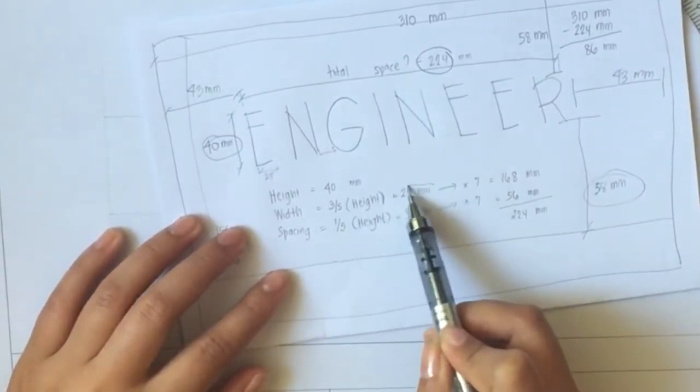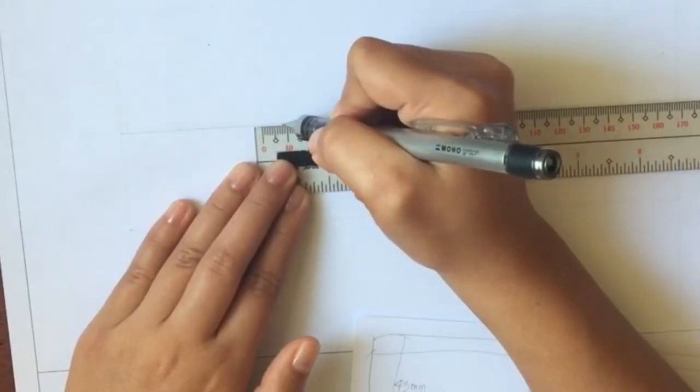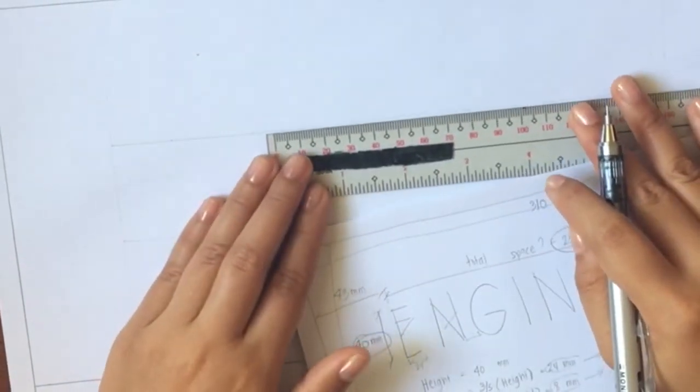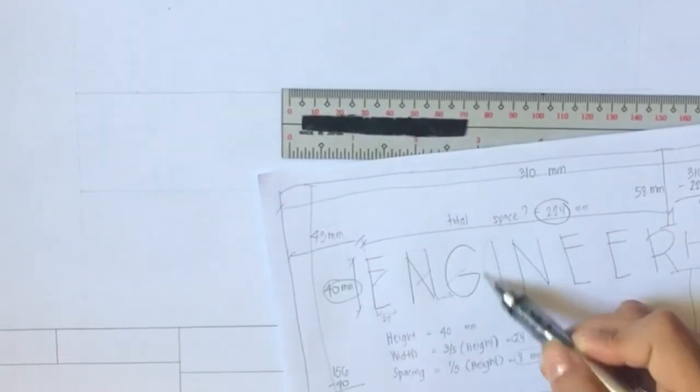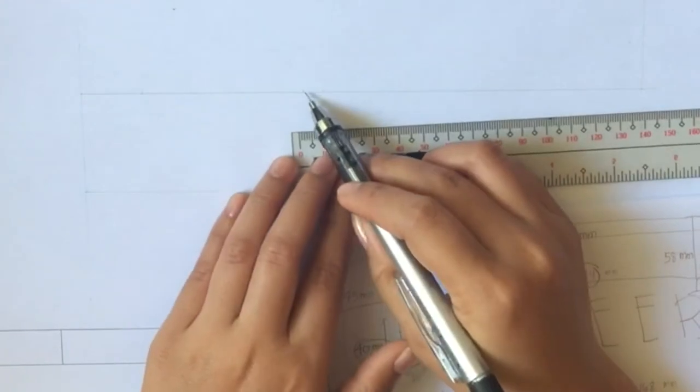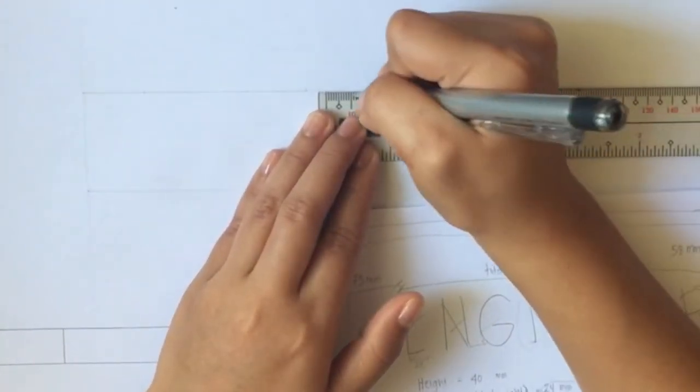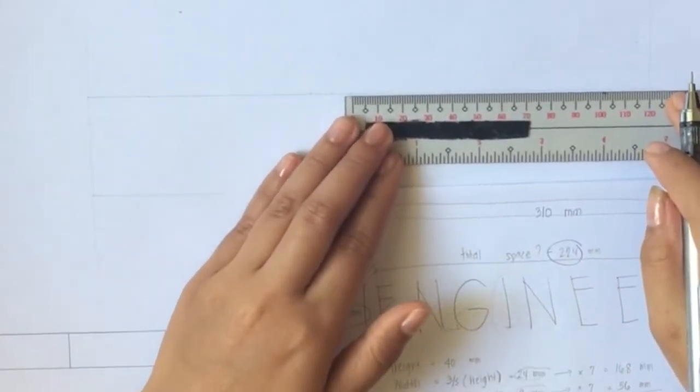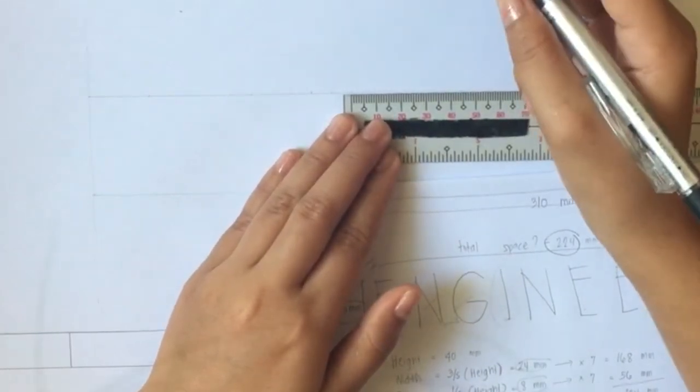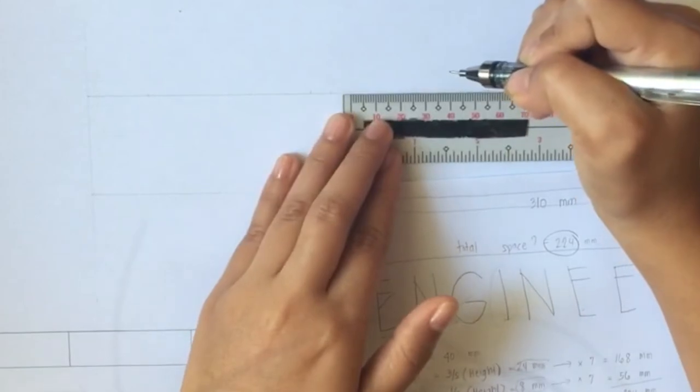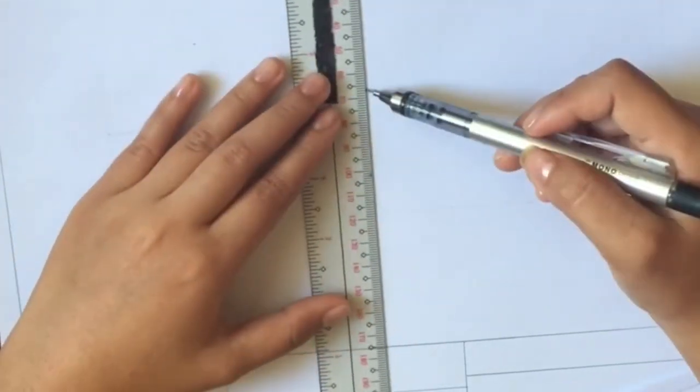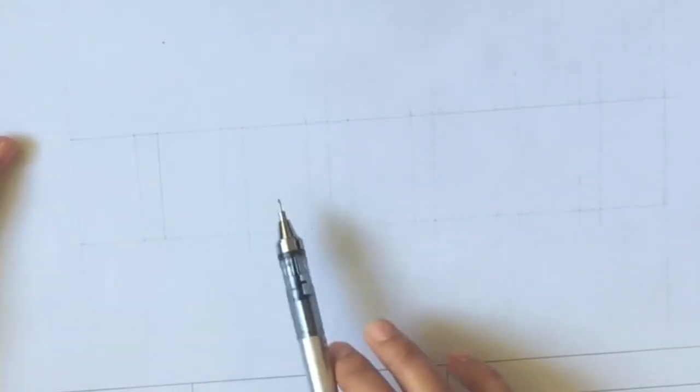The next thing to do is that we will put some markings for each letter. Because we know the width, which is 24, so 24, then spacing 8, then for the letter N 24, then spacing, then 24 for letter G, then spacing. We know I won't cover any spacing, so after this spacing here, we put another spacing, which is 8 millimeters, then for the letter N 24, then spacing, then 24, 8, 24, 8, then 24. Then we connect that up.